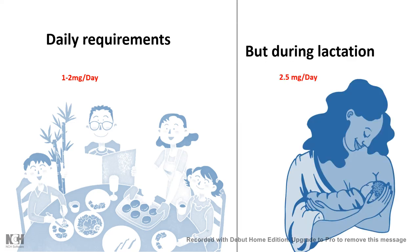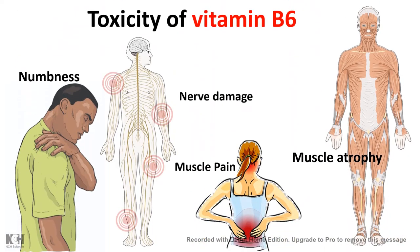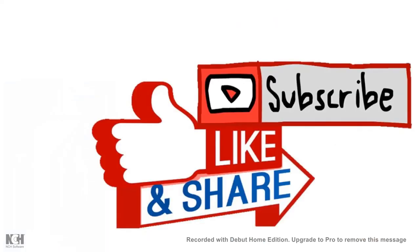Too much vitamin B6 is also a problem. Excess vitamin B6 can lead to toxicity, causing numbness, nerve damage, muscle pain, muscle atrophy, and many other features. Therefore, maintaining a fine balance of vitamin B6 in the body is critically important for healthy physiology.